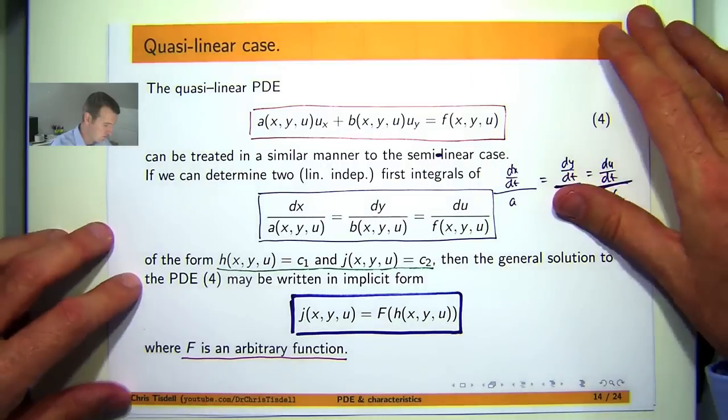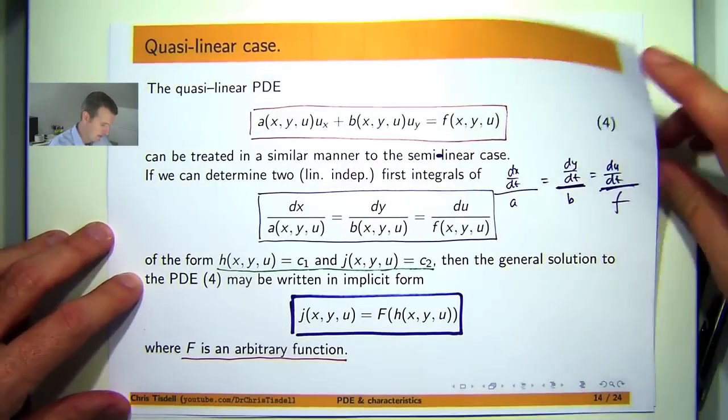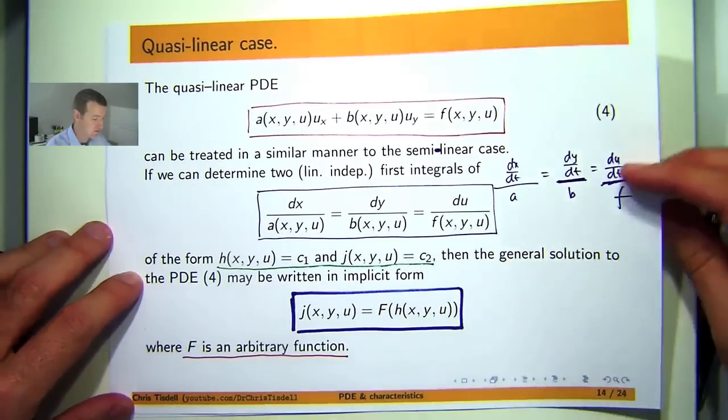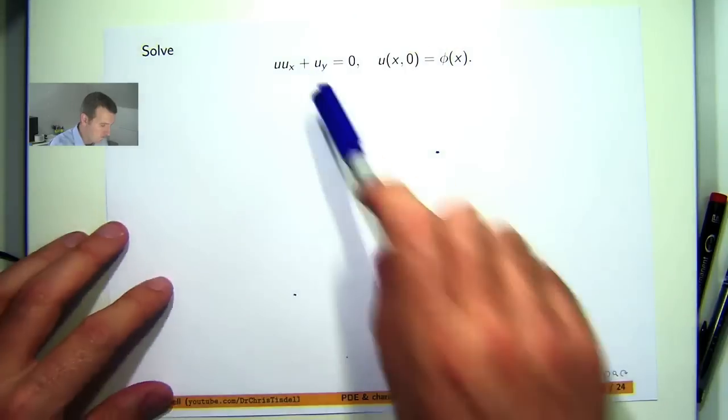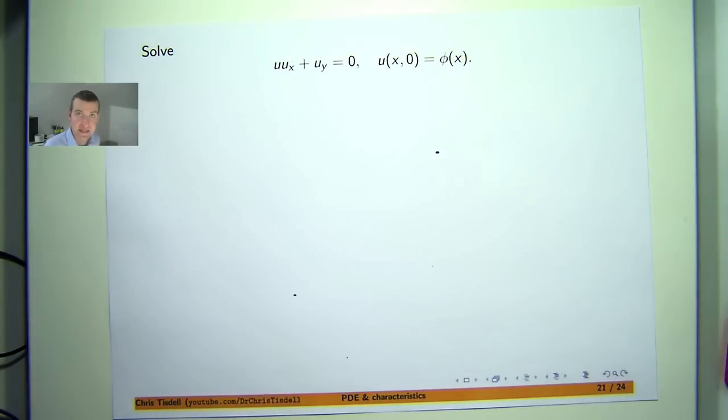And of course the best way to see how it works is to do a problem. So let's do a specific problem. We're going to solve the following reasonably simple but quasi-linear PDE. Phi is just a function of x here.